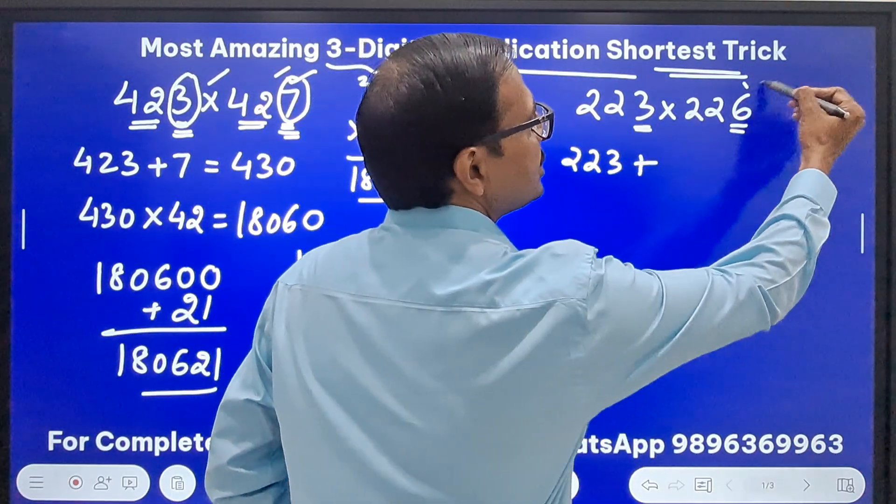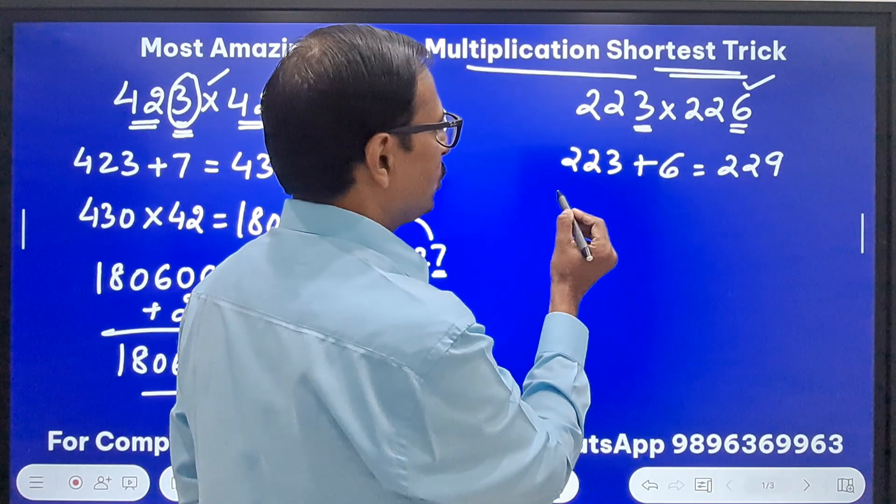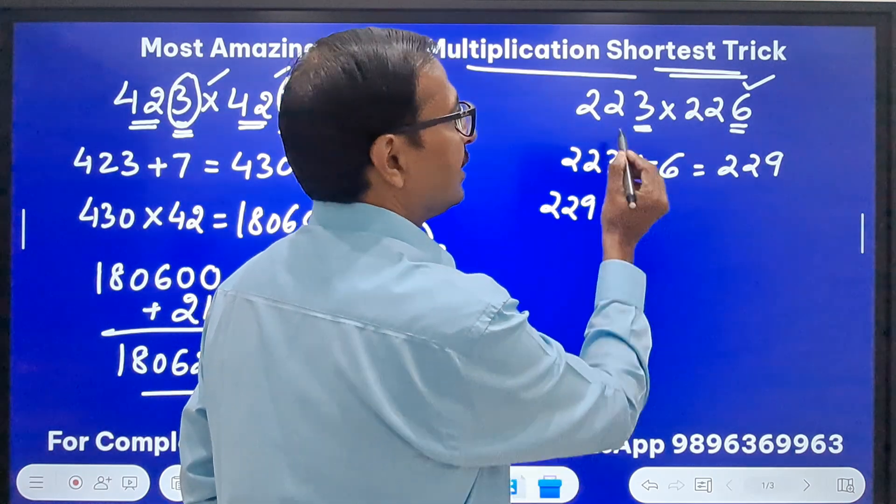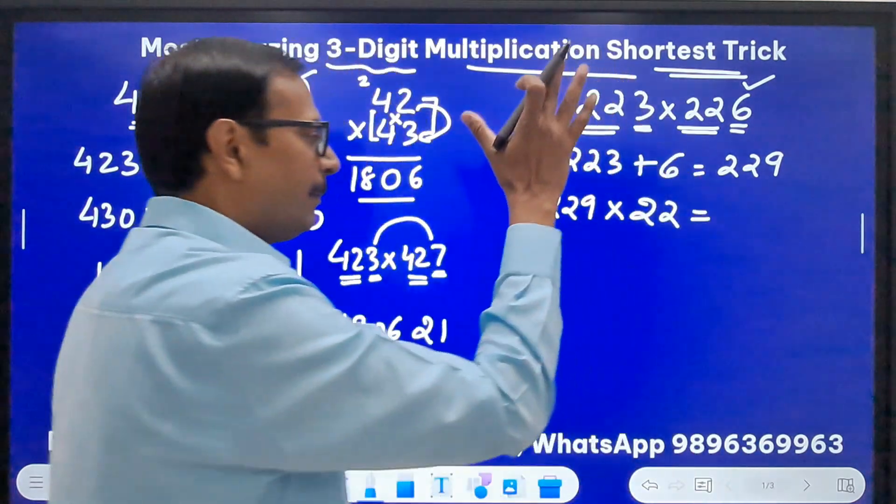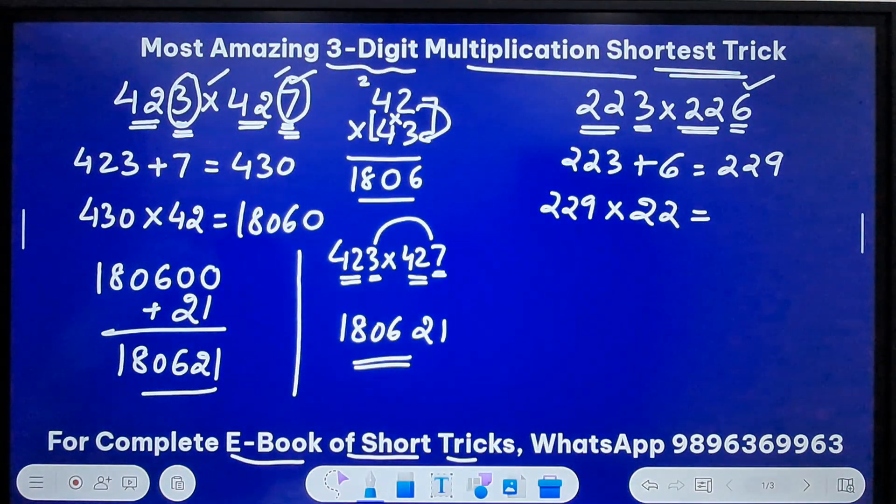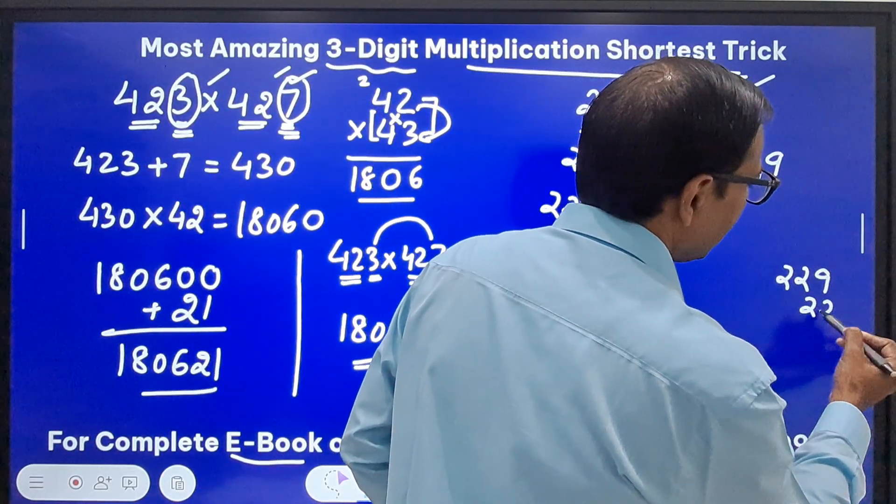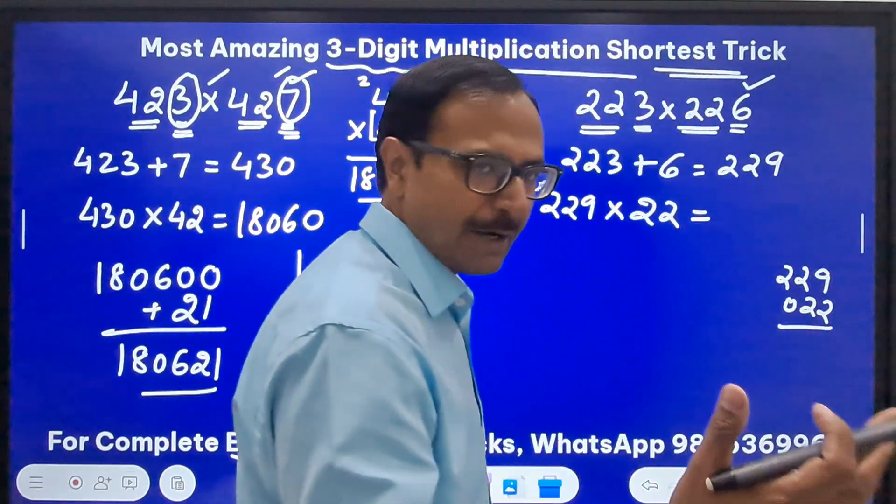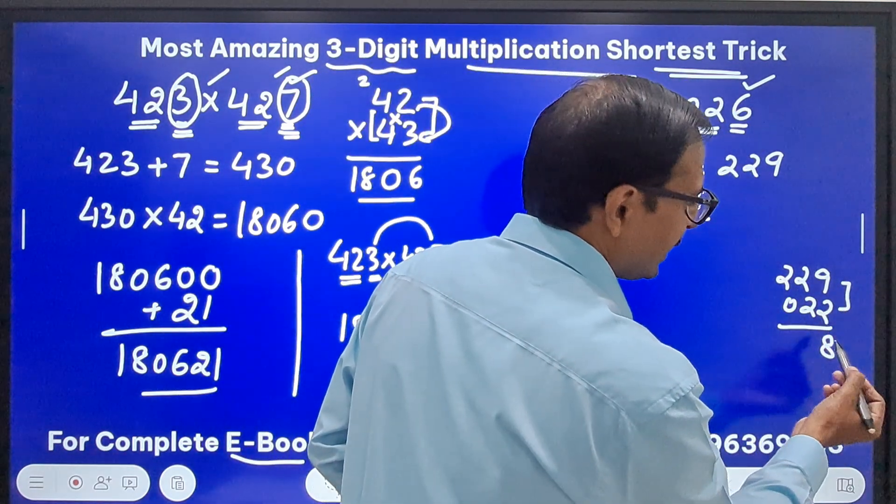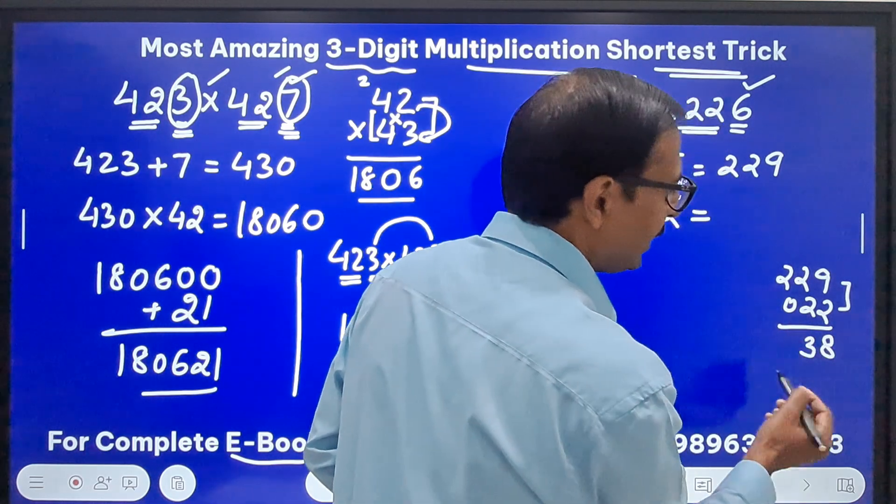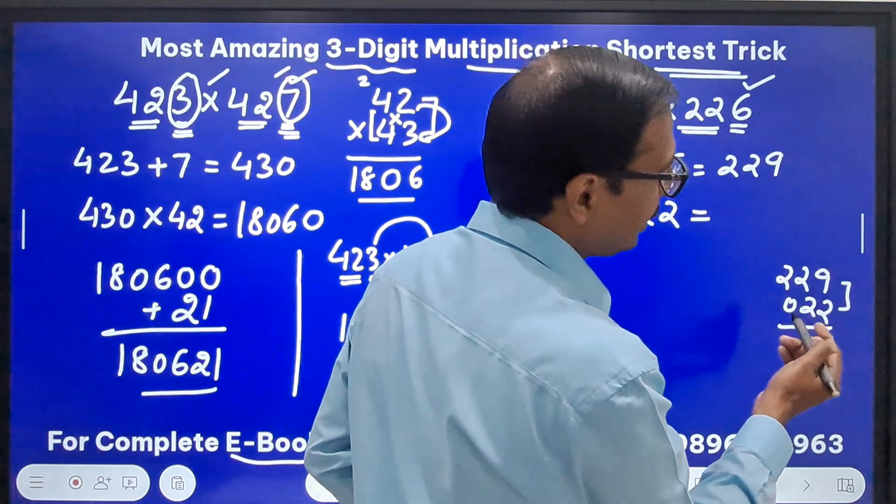223 first number plus the unit digit here 6 gives you 229. And now what do I have to do? 229 times the number here. This is 22. So multiplying 229 by 22, that is what is required now. So how do you find this? 229 times 22. Put a 0 here and use the vertical and crosswise quickly. 9 twos 18, 8, 1 carry. 18 and 4, 22, 23. 23 means 3 and 2 carry.